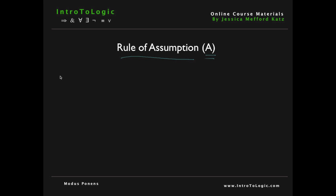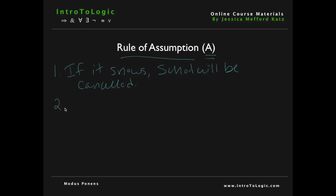So for example, consider the premise: if it snows, school will be canceled. And the second premise: it snows. According to the rule of assumption, we can assume number one and two as assumptions in our argument, and then ask ourselves what we can infer from these two premises, if anything.